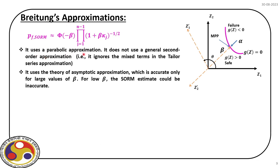Breitung's model uses parabolic approximations — up to quadratic terms — and does not use a general second order approximation; it ignores mixed terms in the Taylor series expansion. The second approximation is that it is accurate only for large values of beta. If the effect of curvature is not prominent, this additional curvature component will not contribute much over first order reliability analysis. But if we have a highly nonlinear limit state with significant curvature, this correction term will contribute substantially, as we will see in detail through the examples.